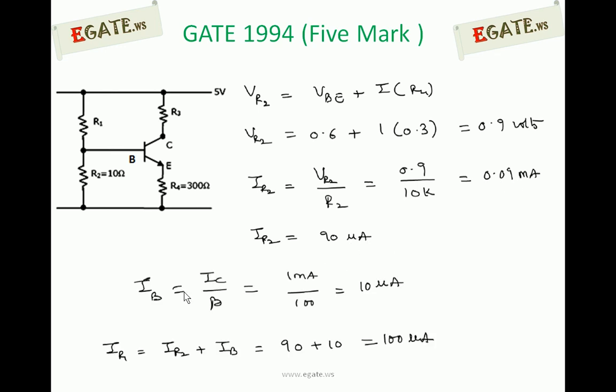Next, IB value is IC by beta which is nothing but 10 microamps. 0.01 mA that is nothing but 10 microamps. So IR1 is nothing but sum of IR2 plus IB: 90 plus 10, that is 100 microamps.